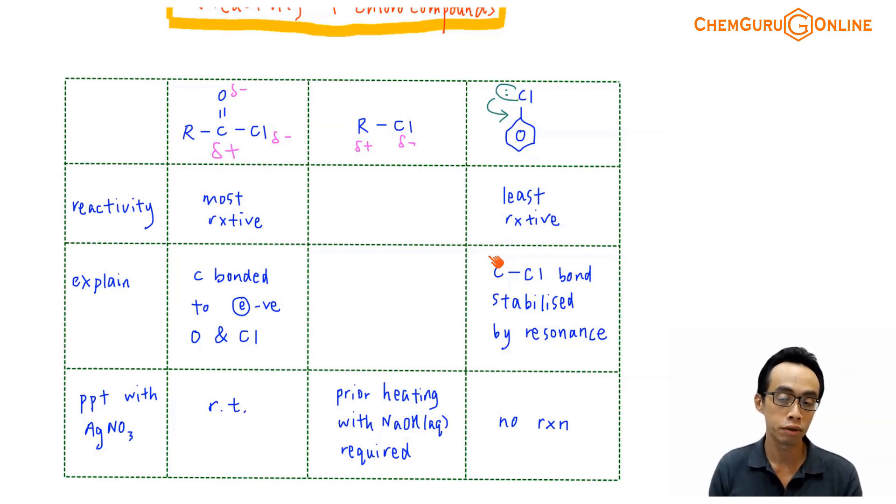We can show the difference in reactivity with the reaction with AgNO3. Because if I try to add AgNO3, I'm trying to precipitate out your chloride, your Cl-. So with my acid chloride, it is reactive enough to react with AgNO3 under room temperature. No heating is required. Because in itself, my acid chloride is reactive enough to react with water at room temperature. You kick out the Cl- and the Cl- will be there to precipitate with your Ag+. So I can get an immediate white precipitate of my AgCl at room temperature with acid chloride.